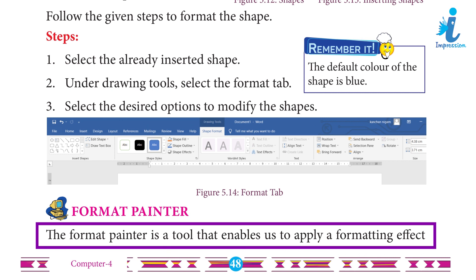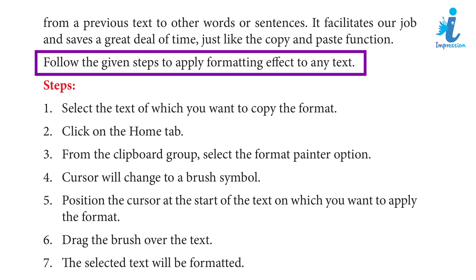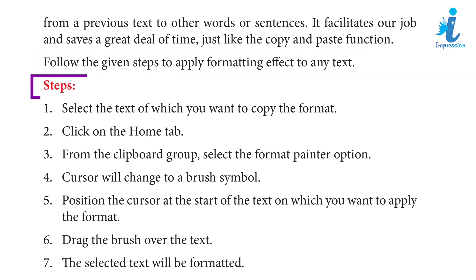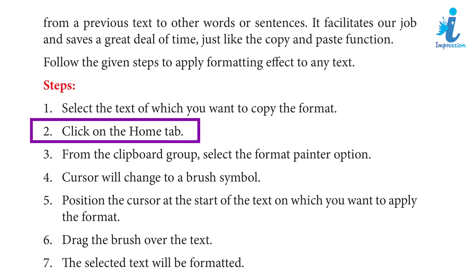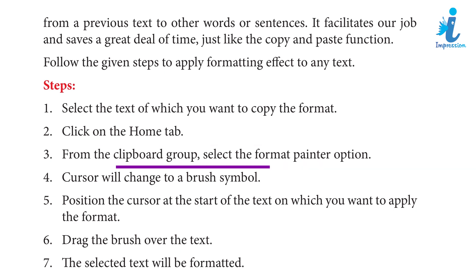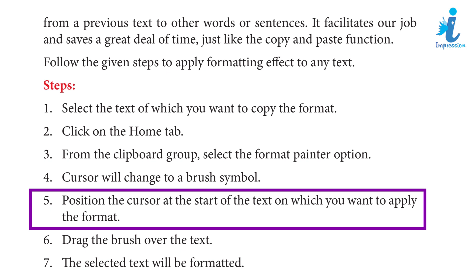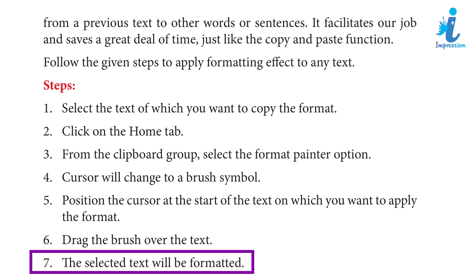Format Painter: The Format Painter is a tool that enables us to apply a formatting effect from a previous text to other words or sentences. It facilitates our work and saves a great deal of time, just like the copy and paste function. Steps: Step 1: Select the text whose format you want to copy. Step 2: Select the Home tab. Step 3: From the Clipboard group, select the Format Painter option. Step 4: The cursor will change to a brush symbol. Step 5: Position the cursor at the start of the text on which you want to apply the format. Step 6: Drag the brush over the text. Step 7: The selected text will be formatted.